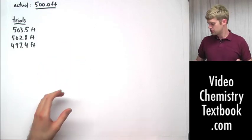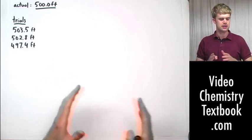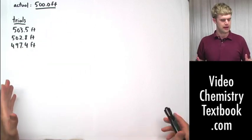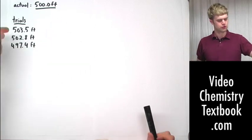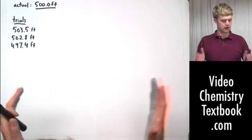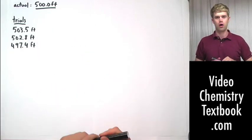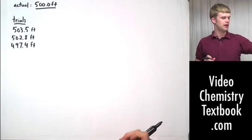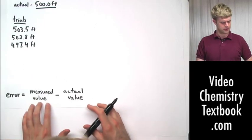In the previous lesson we looked at groups that were trying to measure a distance that was exactly 500.0 feet long. And one group did a number of trials where they came up with these three values for the length of this distance, all of which were off by a little bit. So let's see how we'll calculate error of each one of these measurements.